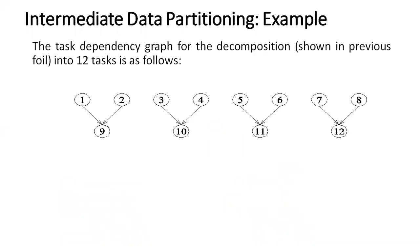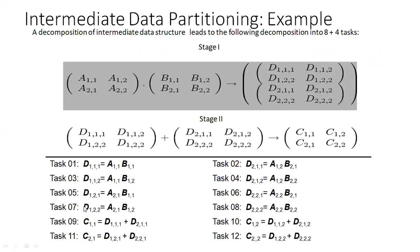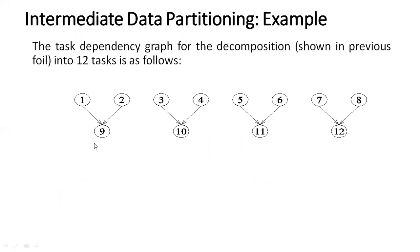Another example of intermediate data partitioning: the task dependency graph for the decomposition shown previously results in 12 tasks. From these 12 tasks, a task dependency graph can be drawn as shown in this figure.